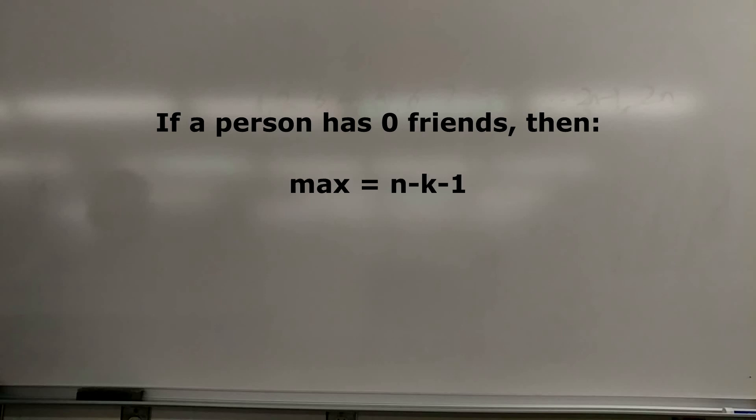When a person has zero friends in the group, this decreases the number of maximum friends that a person can have. And they can be represented as N minus K minus one, where K is equal to the number of people that have zero friends.